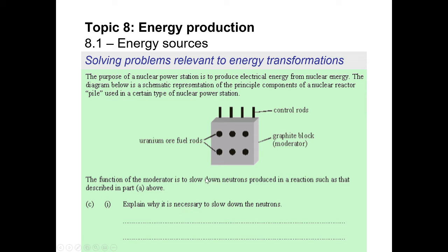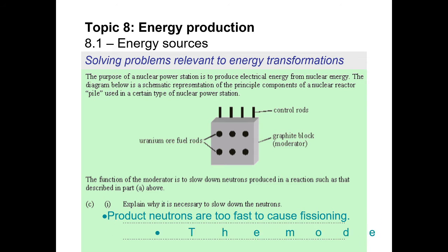CI: explain why it is necessary to slow down the neutrons. The neutrons produced as part of the fission reaction might be traveling too fast or too slow — you don't know for sure. Usually these neutrons are moving too fast, so they have to move through a moderator — which might be graphite or heavy water — that slows them down to just the right speed to interact with the uranium-235 nucleus appropriately, enabling a proper fission reaction.